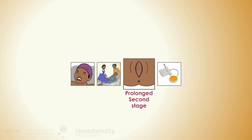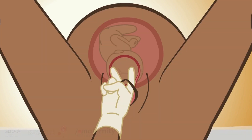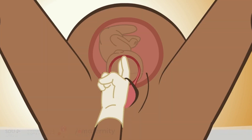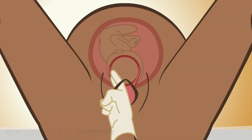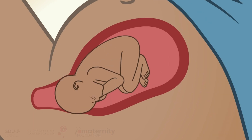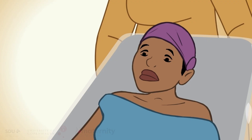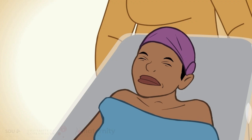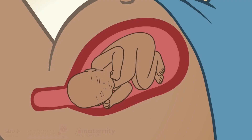Prolonged second stage: The second stage of labor starts when the cervix is fully dilated at 10 centimeters. The head should now descend to the pelvic floor. It's best to wait with pushing until the head is at the pelvic floor, but if it is not after two hours, pushing can be started.